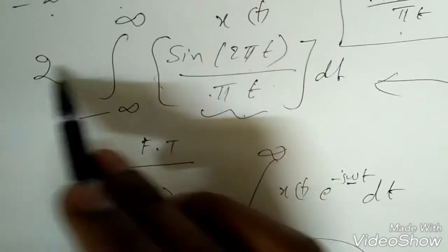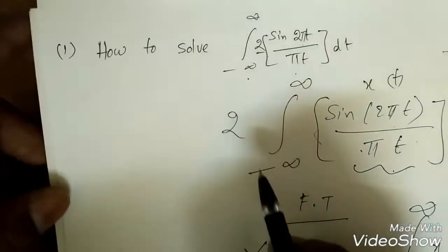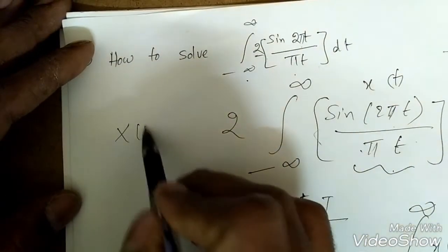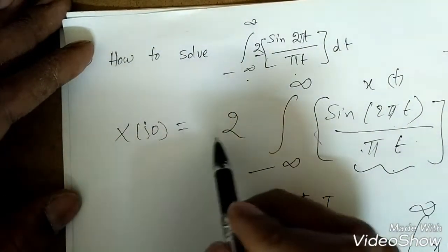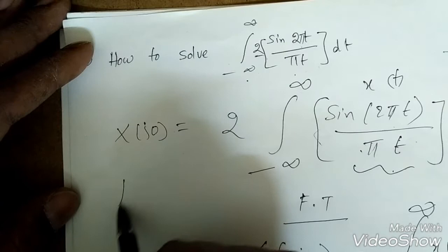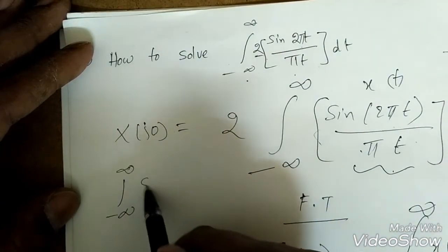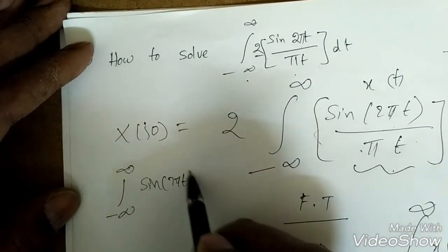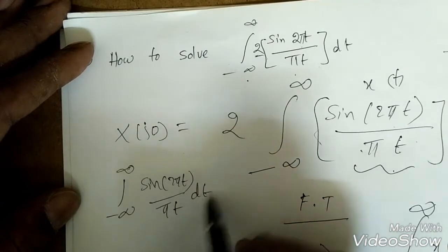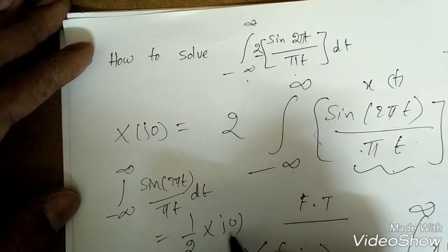So x of t is nothing but 2 sine 2πt by πt. So this is x of j0. But we need this, so the integral from minus infinity to infinity of sine 2πt by πt dt is equal to 1/2 times x of j0.